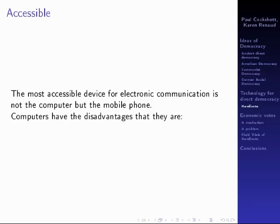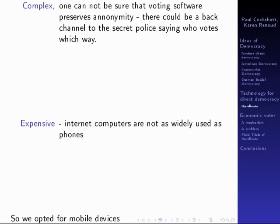We advocate using mobile phones because they're the most accessible and common device. Computers have the disadvantage that because of their complexity you don't know what the voting software is actually doing. There could be back channels in it that change your vote or reveal to someone else the way you voted. They're also expensive, and internet computers are not as widely available as mobile phones. There may only be one in a house, so people may not be confident that the way they vote is hidden from other people in the house. So we opted to use mobile devices.